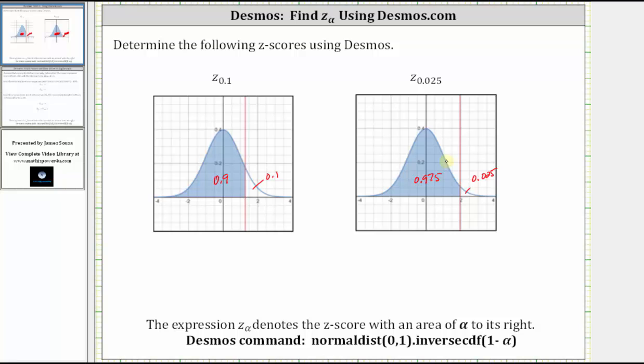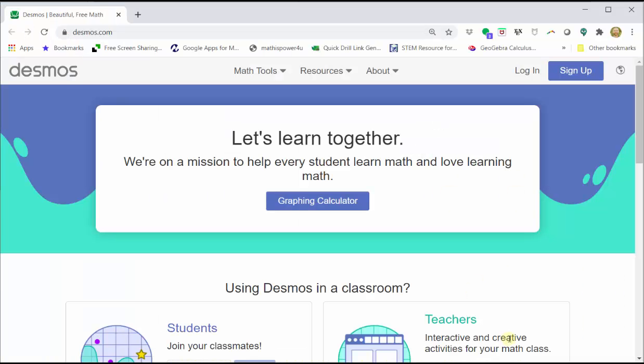Now let's go to Desmos and find these two Z-scores. We go to Desmos.com and click graphing calculator.